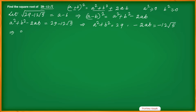Now, 2ab equals 12 root 5, so ab equals 6 root 5. You can find all options by trial method to find where a squared plus b squared equals 29. That is one way of finding a and b. I am now applying a formula instead.